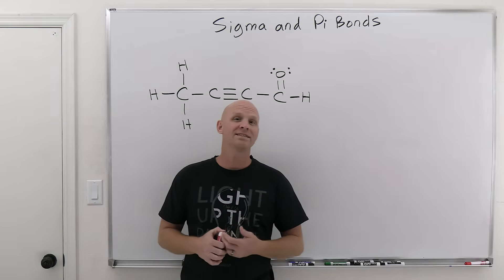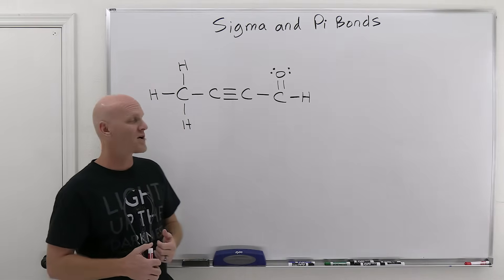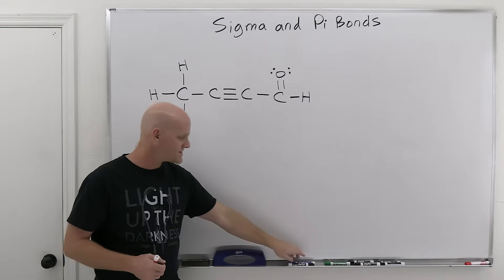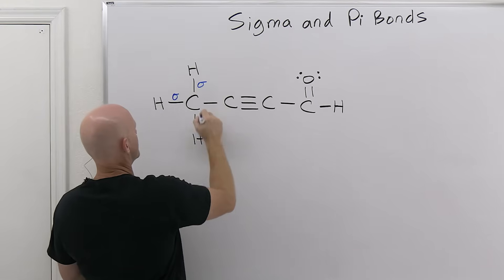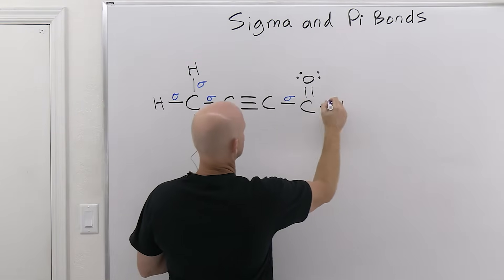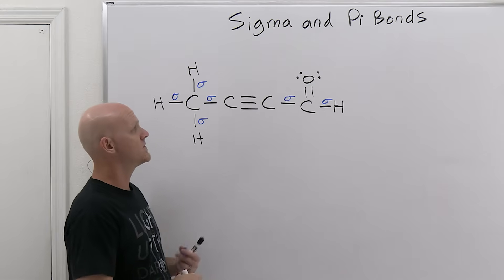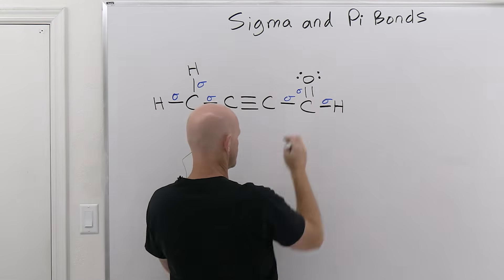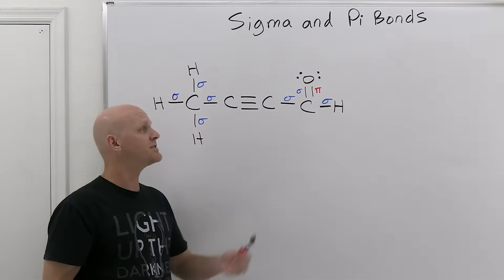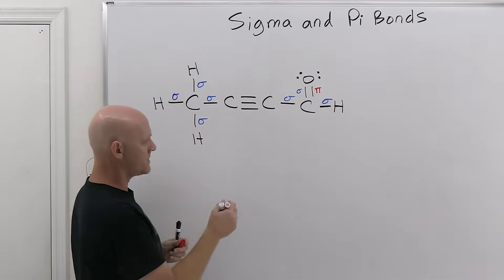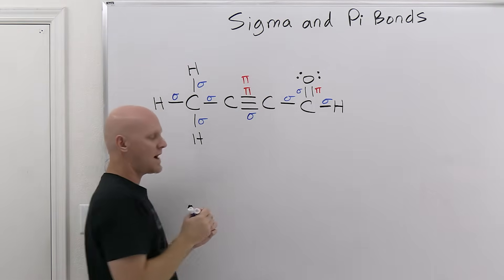The first thing we're going to do is learn how to identify sigma and pi bonds in a Lewis structure — and we're going to do this before we even really talk about what sigma and pi bonds are. It turns out that all single bonds are sigma bonds, every last one of them. And when you've got a double bond or a triple bond, the first bond between two atoms is always going to be a sigma. For a double bond, the first one is a sigma, but any additional bonds after that have to be pi — you can only have one sigma bond between two atoms. So a double bond is one sigma and one pi bond, and a triple bond is a single sigma bond with two pi bonds.